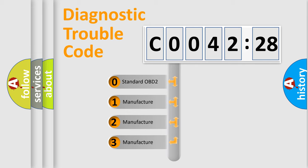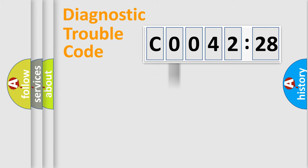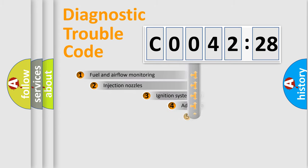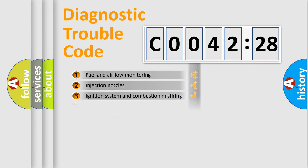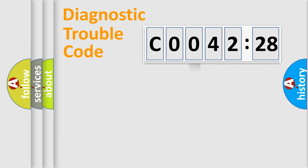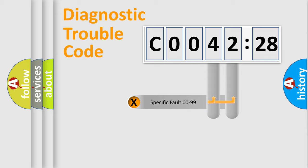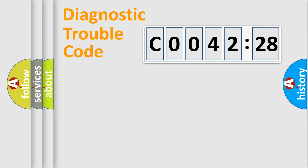If the second character is expressed as zero, it is a standardized error. In the case of numbers 1, 2, or 3, it is a more specific expression of a car-specific error. The third character specifies a subset of errors, and this distribution is valid only for the standardized DTC code. Only the last two characters define the specific fault of the group.